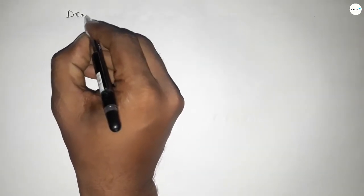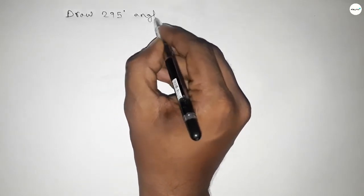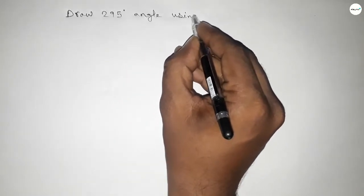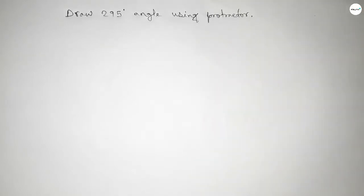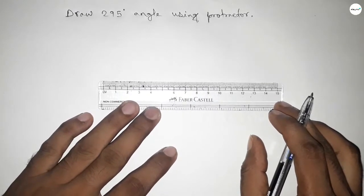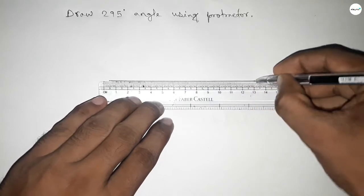Hi everyone, welcome to SSR Classes. Today in this video we have to draw 295 degree angle by using protractor. So let's start the video. First of all, we have to draw here a straight line of any length.